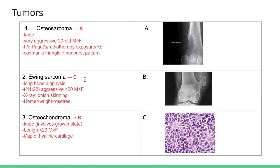Ewing's sarcoma is an aggressive tumor of the long bone diaphysis — the shaft of the bone. It's associated with the t(11;22) mutation, also seen in patients less than 20 years old, mostly in men. On x-ray you see the onion-skinning appearance where you can see different layers of the bone coming apart, and on histology you see the classic Homer Wright rosettes.